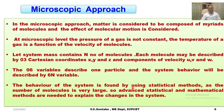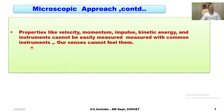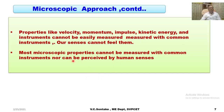The behaviour of the system is found by using statistical methods, as the number of molecules is very large. Advanced statistical and mathematical methods are needed to explain the changes in the system. Properties like velocity, momentum, impulse, and kinetic energy — most microscopic properties cannot be measured with common instruments, nor can they be perceived by human senses.